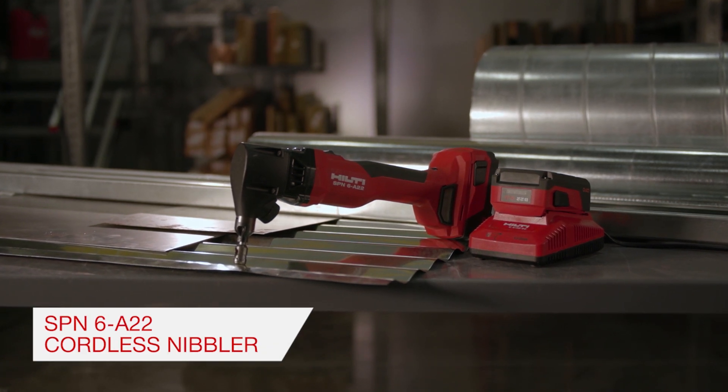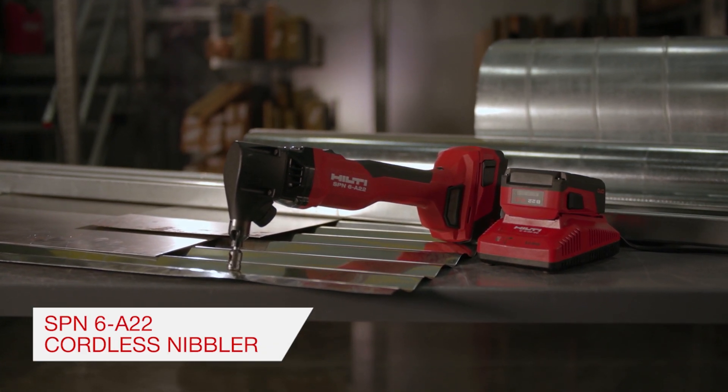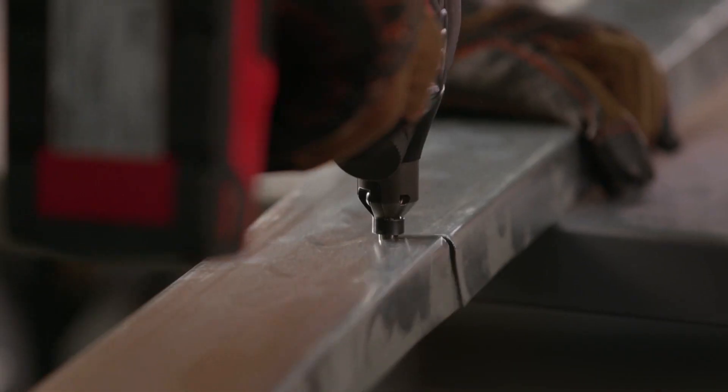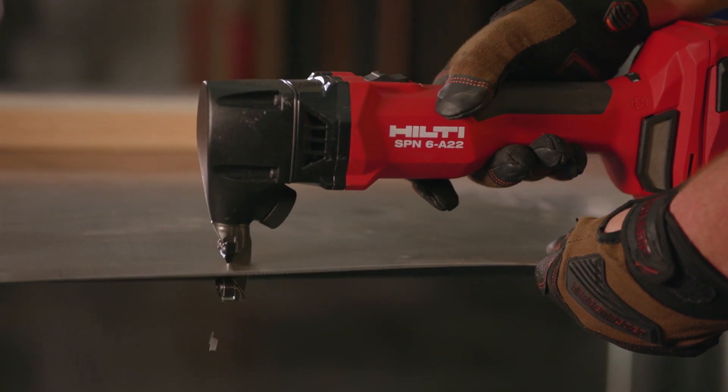The Hilti SPN 6A22 is a cordless nibbler designed to cut sheet metal with speed, power, and minimal distortion.